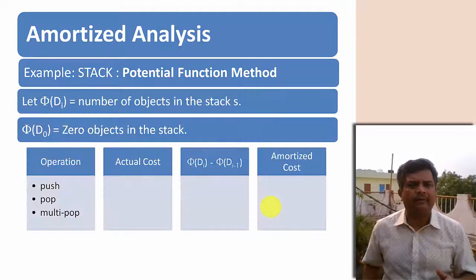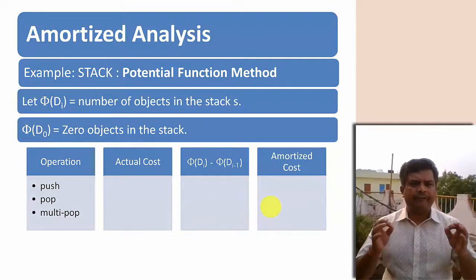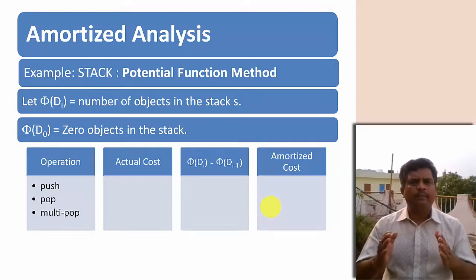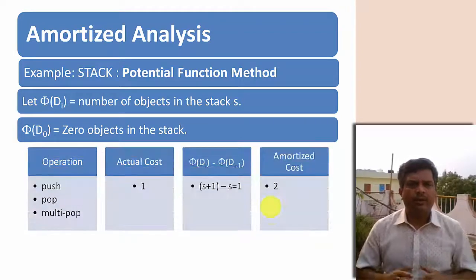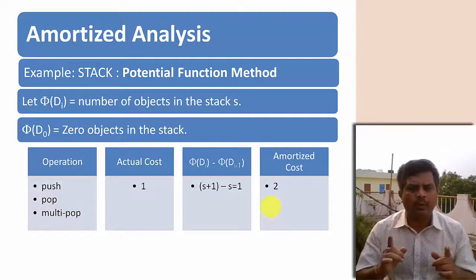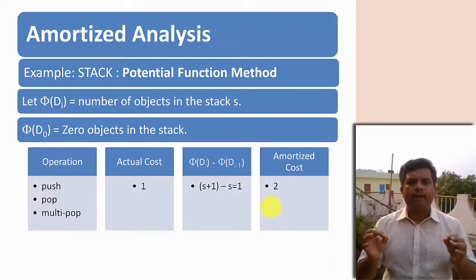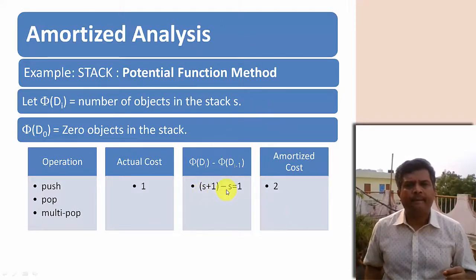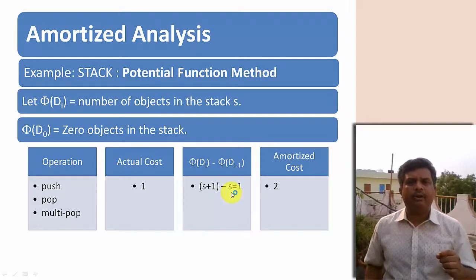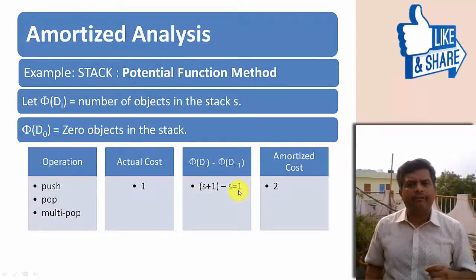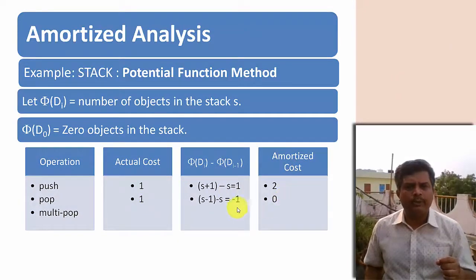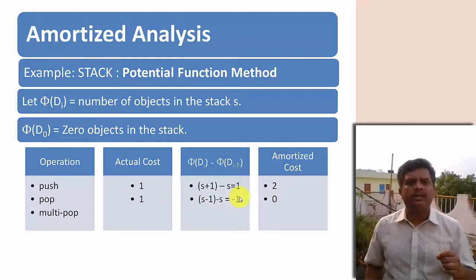Let φ(Di) be the number of objects in stack s and φ(D0) = 0. For a push operation, the actual cost is 1. φ(Di) − φ(Di−1) becomes (s+1) − s = 1, since one element is added, so the amortized cost is 1 + 1 = 2. For a pop operation, the actual cost is 1, the amortized cost is 0, and the difference in potential becomes −1.